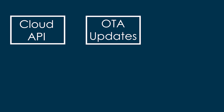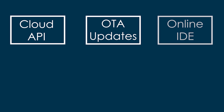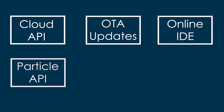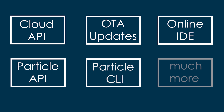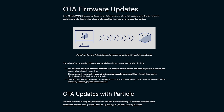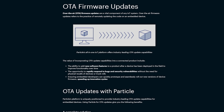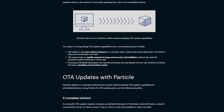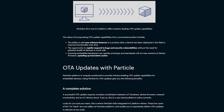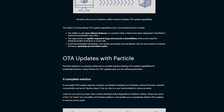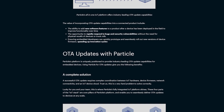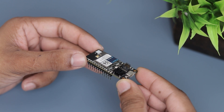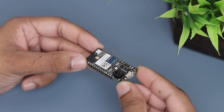This Photon2 has all the benefits of the Particle.io service, including Cloud API, OTA updating capabilities and online IDE as well as API, CLI and much more. Particle OTA allows you to update your entire IoT device — both the Particle device and any other components — over the air. Here you can update the device framework or fix bugs without the need for manual intervention.